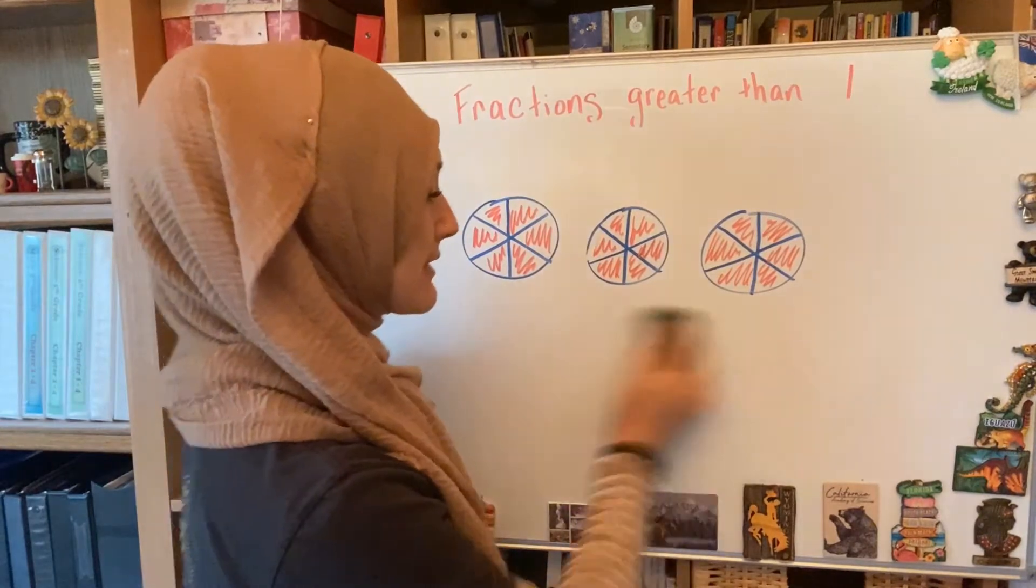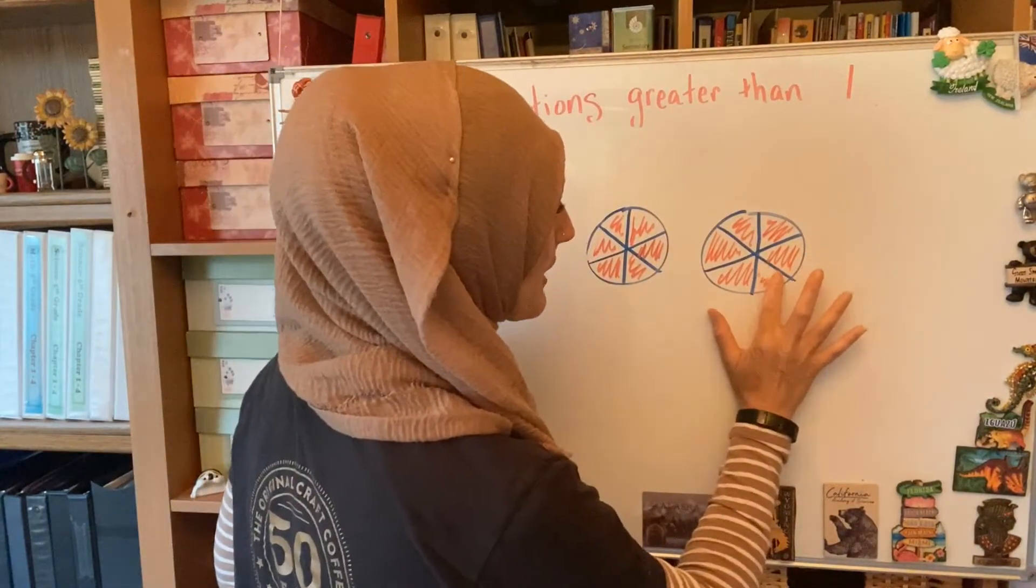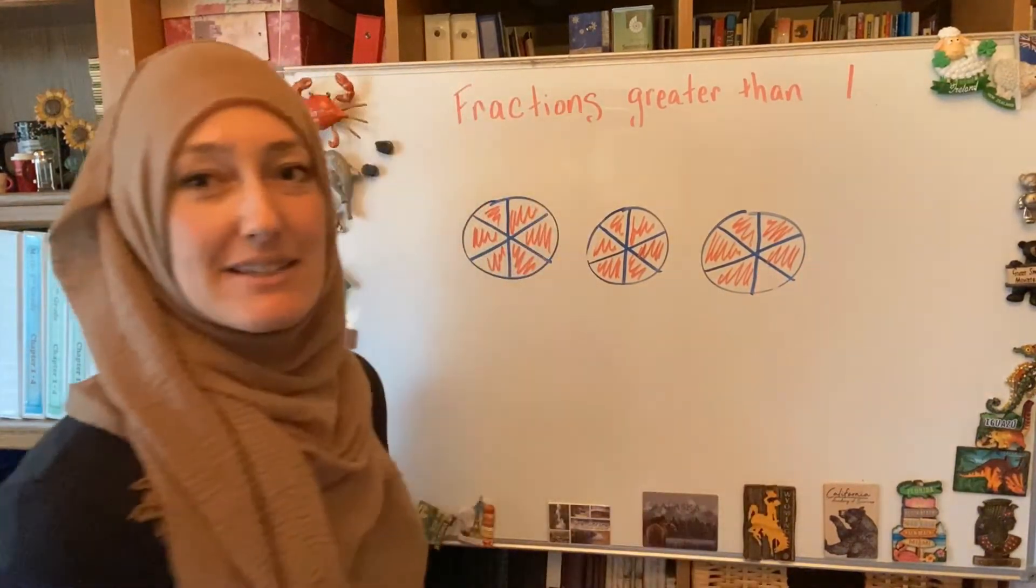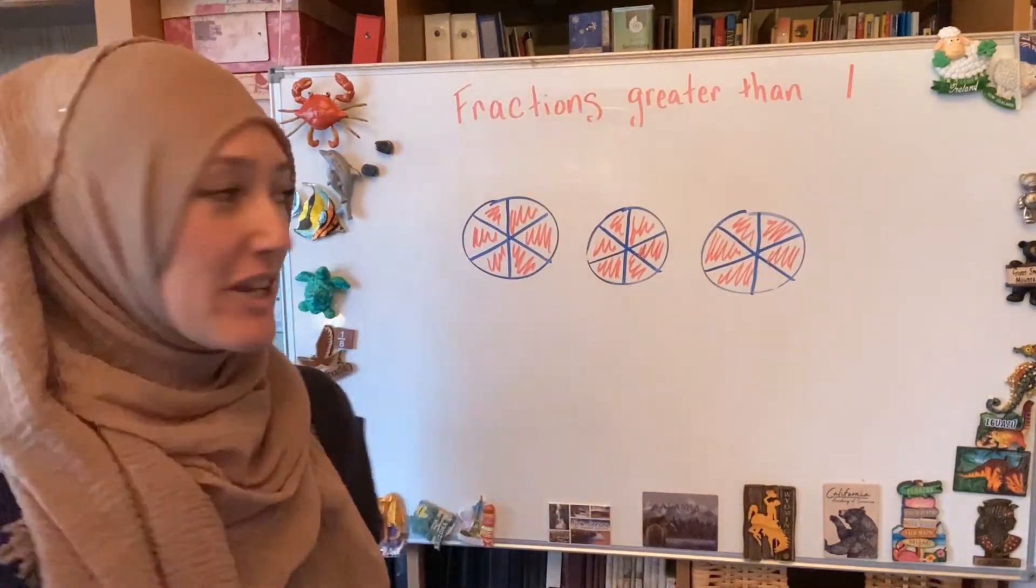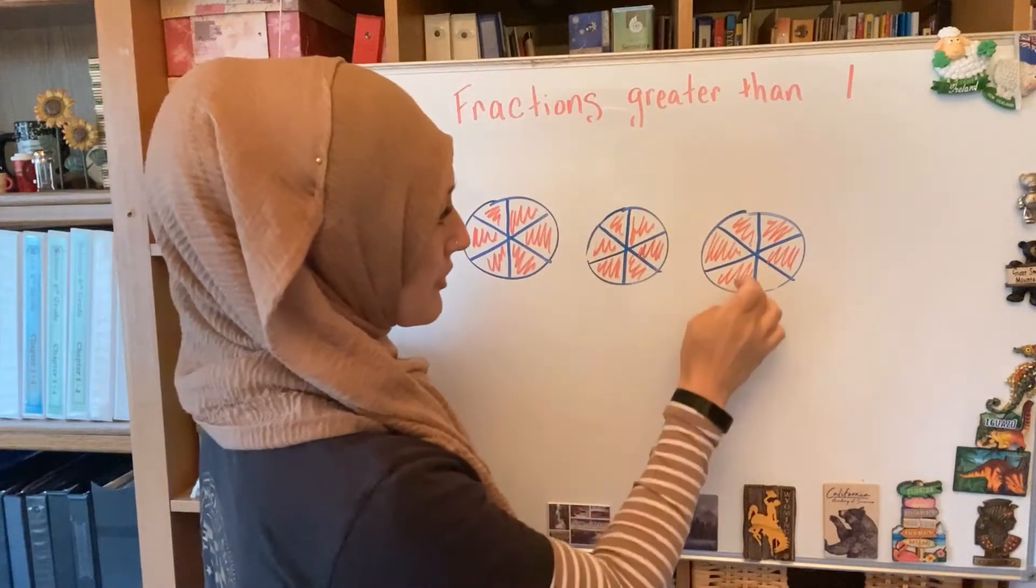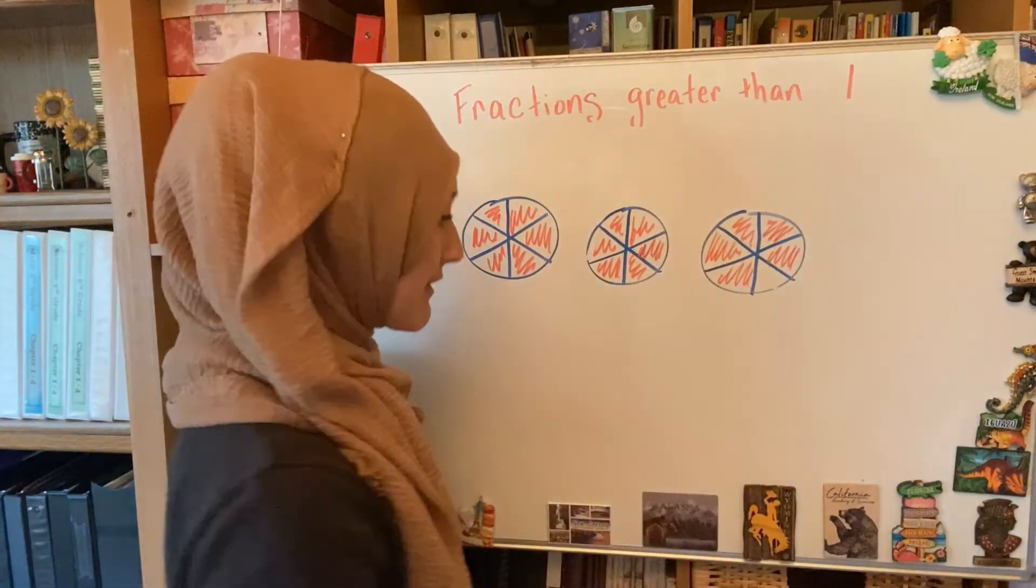If I were to take away some of these, so let's say I take away just one of them, I still have the same thought process. How many pieces do I have that are shaded? Now I have 6, 12, 13, 14, 15, 16, 17.